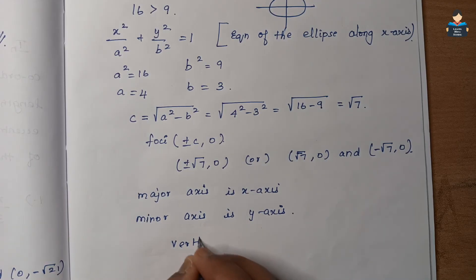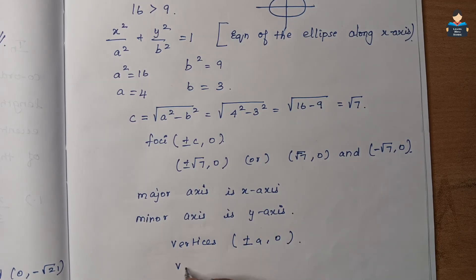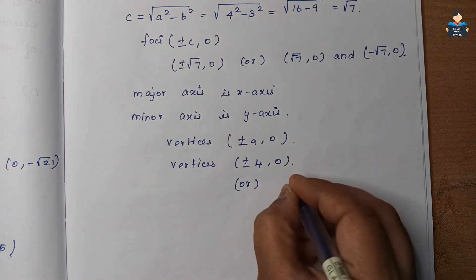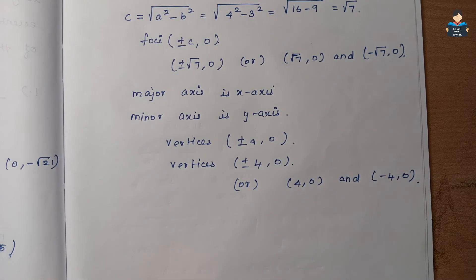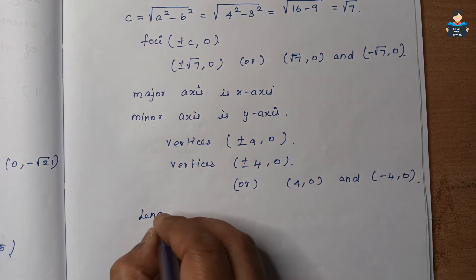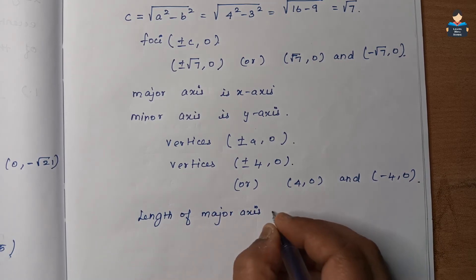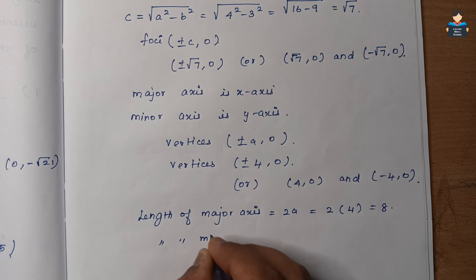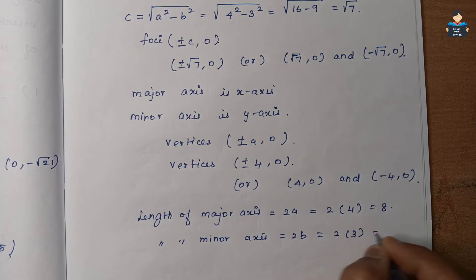The vertices are at (±a, 0) = (±4, 0), so vertices are (4, 0) and (−4, 0). The length of the major axis is 2a = 2 × 4 = 8, and the length of the minor axis is 2b = 2 × 3 = 6.